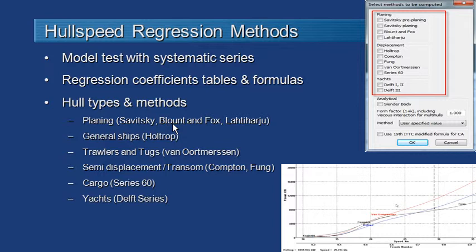The resistance methods are usually identified by the name of the author who published the paper. For planing we have Savitsky, Blount and Fox, and Lahtiharju. Holtrop's general purpose ship method, Van Oortmerssen's method for trawlers and tugs and other squat vessels, Compton's method for fast semi-displacement vessels, Fung's series for faster larger vessels with transoms such as destroyers and patrol boats, Series 60 for cargo ships, and the Delft yacht series methods. All of these can be used for the types of vessels that each method was developed for.